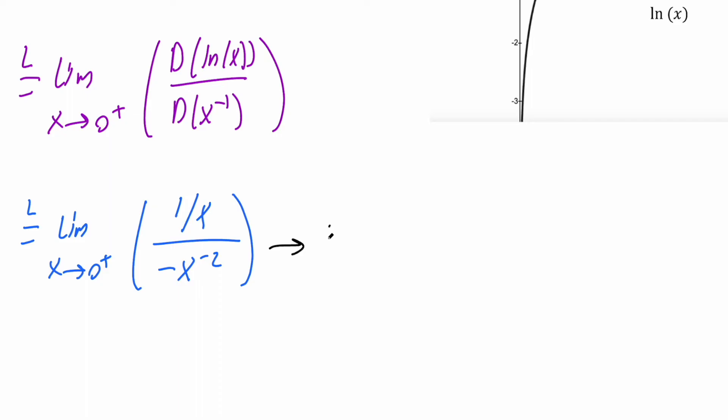At this point, we can rewrite what we have to make it more obvious. So the limit as x approaches zero to the right, and what we have is one over x divided by negative x raised to negative two, which is the same as negative one divided by x squared. And so we'll clean up our fractions. I'm just putting parentheses around them.